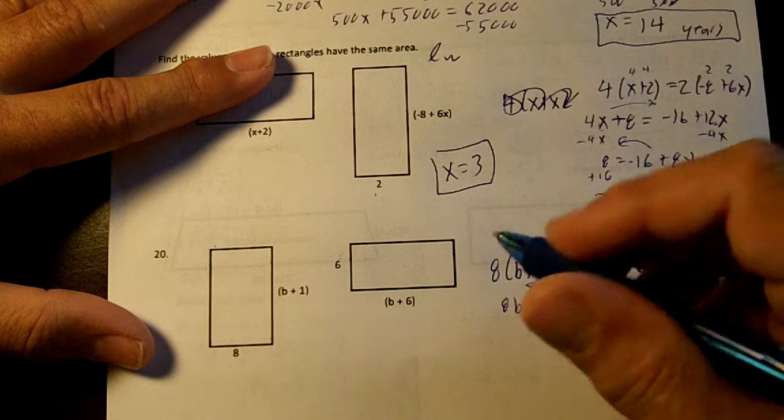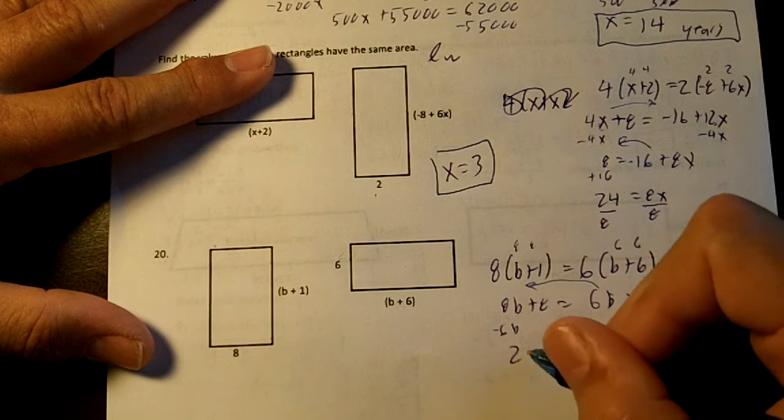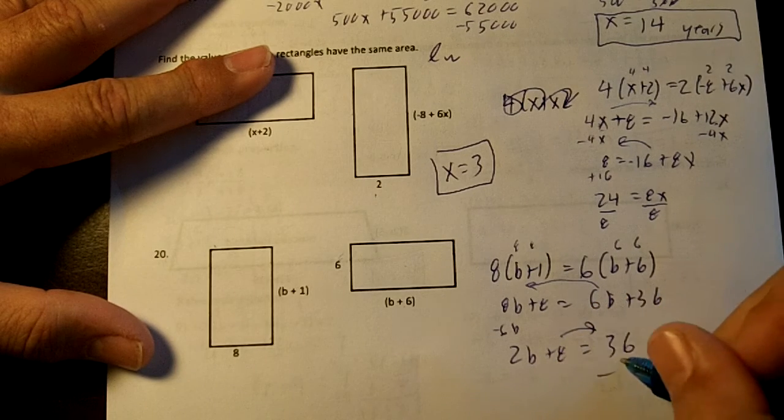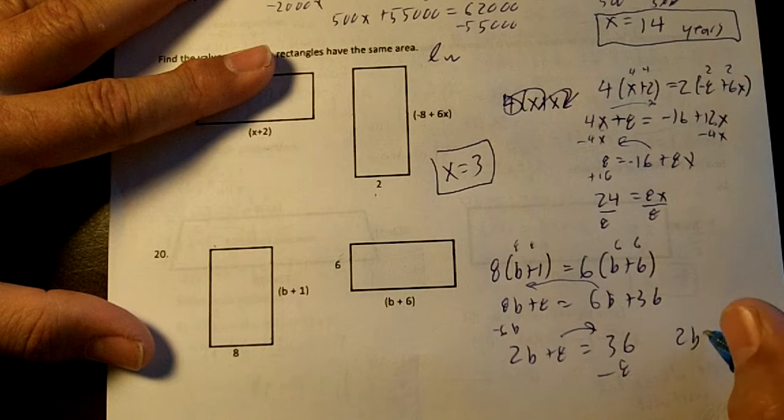6b smaller, move it over. You get 2b plus 8 equals 36. Move the 8 over. You get 2b equals 28.